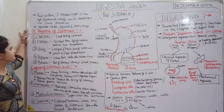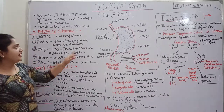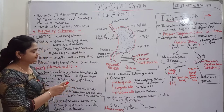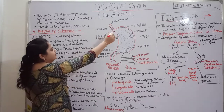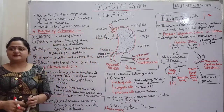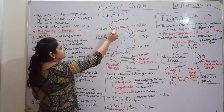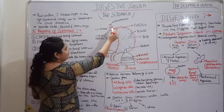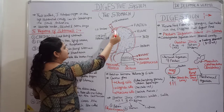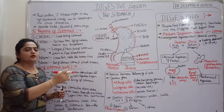Stomach has five regions. First, cardiac — the first part of the stomach. In this part, the cardiac sphincter is present. Cardiac sphincter is a thin muscular valve. Its role is to prevent backward movement of food — food enters from the oesophagus to the stomach, but not from the stomach back to the oesophagus. The cardiac sphincter prevents this backward movement.